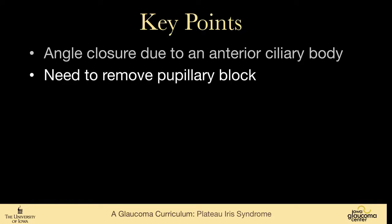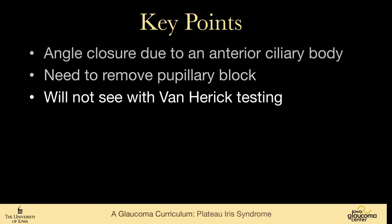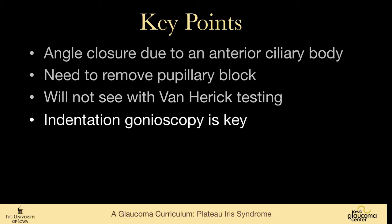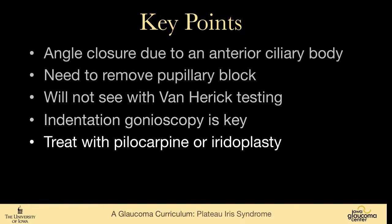So this is an angle closure due to an anterior ciliary body. One needs to remove the pupillary block with an iridotomy. You won't make this diagnosis on Van Herrick testing, so one does need to do gonioscopy. Indentation gonioscopy is really the key here. And we treat this with pilocarpine or iridoplasty.